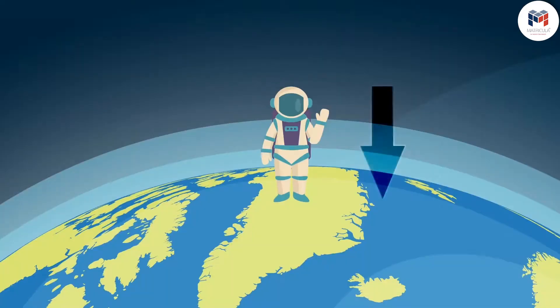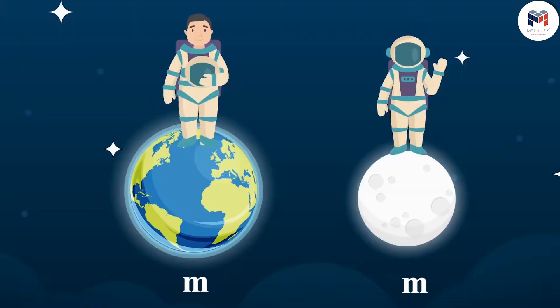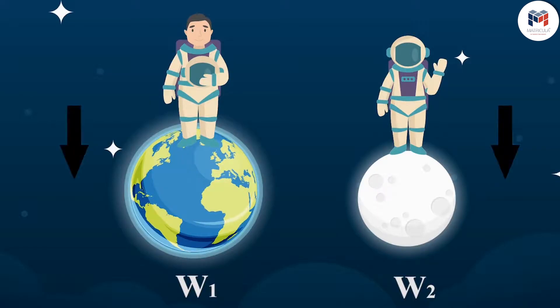Weight is a force which acts vertically downwards, so it has both magnitude and direction. Another important distinction is that the mass of an object remains the same everywhere, whereas the weight of an object varies with the position of an object, because acceleration due to gravity varies with position.